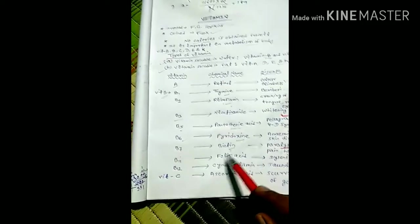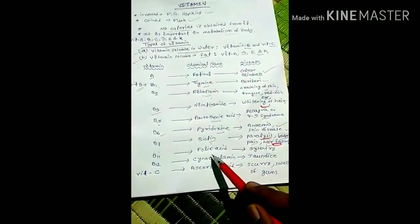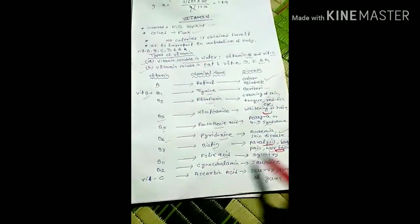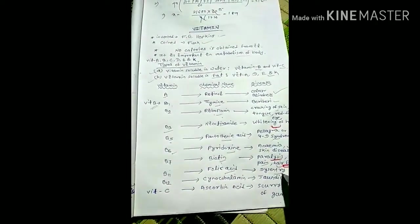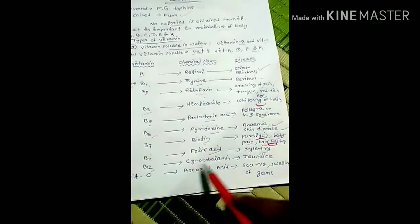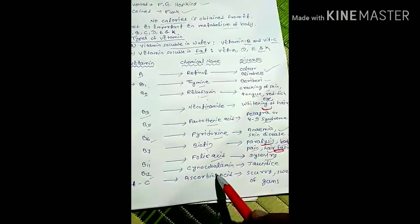Vitamin B11 is known as folic acid, and absence of vitamin B11 causes dysentery. Vitamin B12 is known as cyanocobalamin, and absence of cyanocobalamin causes jaundice.